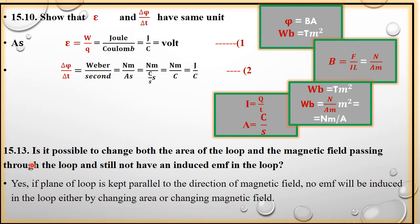Next question number 15.10: Show that EMF and delta phi over delta t have same units. Now students, yahaan show karna hai ki EMF and delta phi over delta t, rate of change of flux ka unit same hota hai. Now, let's take EMF first. EMF kis ke equal hote hain? Work done per unit charge. Work ko kis mein measure karte hain? Joule mein. Charge ko coulomb mein. So, Joule per coulomb is equal to volt. Joule per coulomb kis ke equal hote hain? Volt ke equal hote hain. Yeh equation number one mark karte hain.